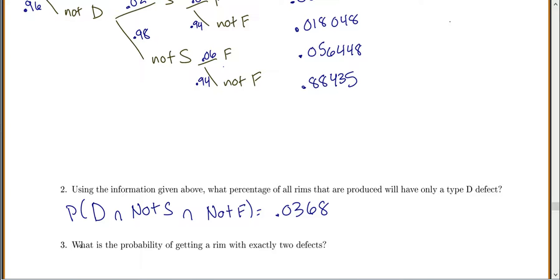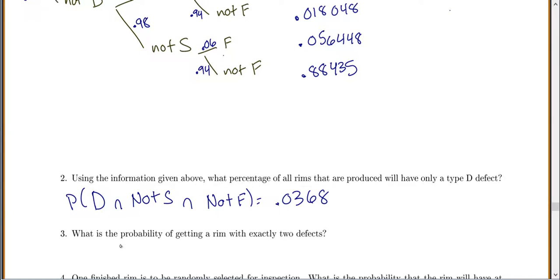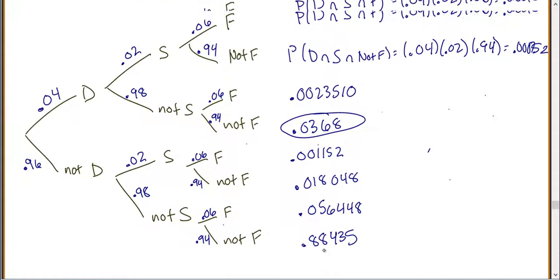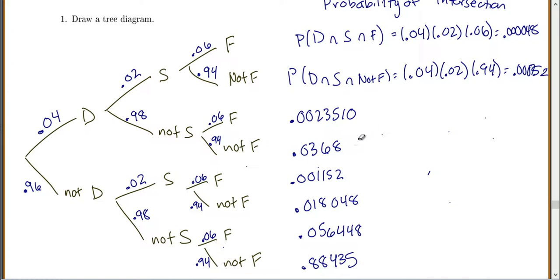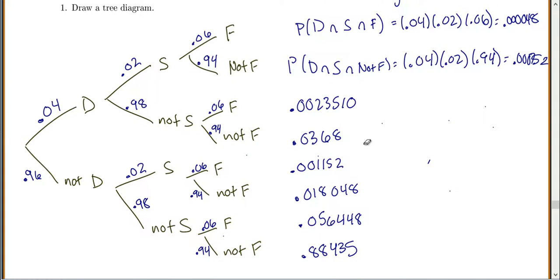That one you probably could have done without the tree diagram, but the next one is much easier with the tree diagram. What is the probability of getting a rim that has exactly two defects? To do this, we'll go through and circle every branch that has two defects. We could go D and S, that would be two, so then not F. Then if I did D and not S, I would also need an F to get two. D, not S, not F would only be one.